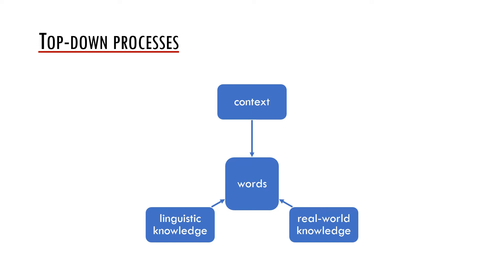First, we may use contextual information to understand what is being said. By context we mean both the linguistic context — that is what has been said before — or the situational context. Second, we may use linguistic knowledge in top-down processing. For example, we may know the verb's subcategorization frame, so we may expect how a sentence will continue.